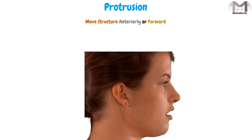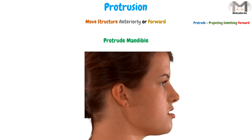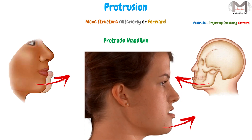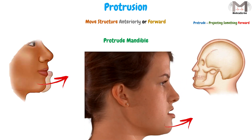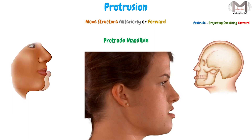The protrusion is the movement that will make the structure move anteriorly or forward, because the word protrude means projecting something forward. Like when we protrude the mandible — we move or protrude the mandible anteriorly or forward. So protrusion means to move something anteriorly.